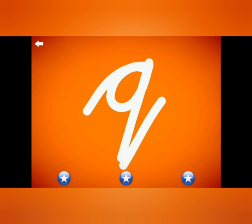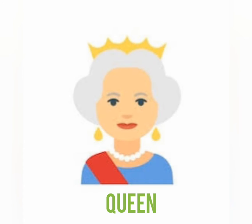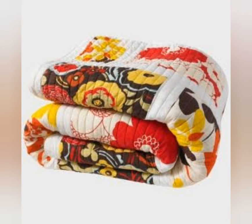This is small cursive Q. Q says quah, quah, quah, quen. Q says quah, quah, quah, quail.